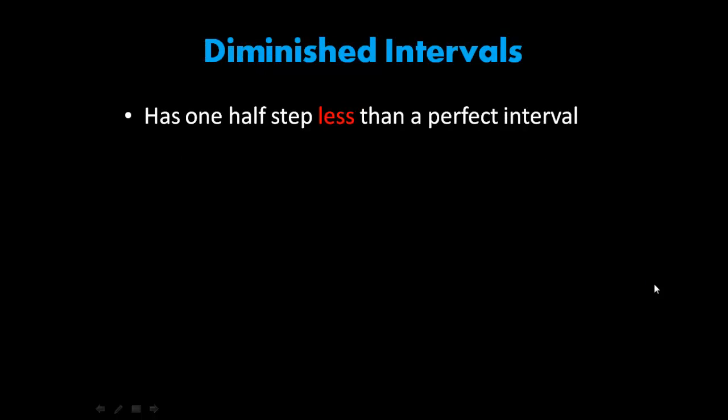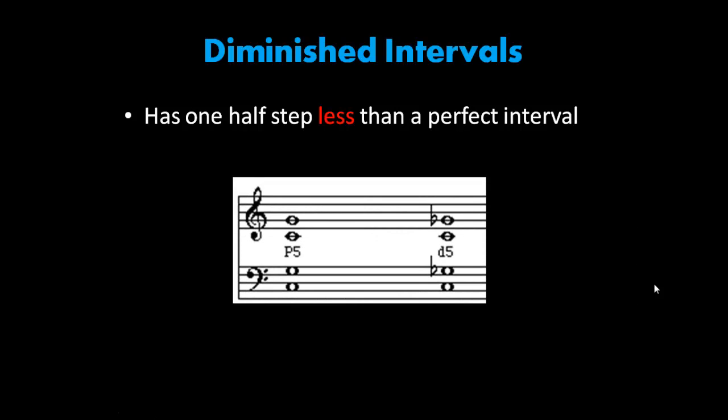Diminished intervals. They have one half step less than a perfect interval. As you can see, here's a perfect fifth, and here is a diminished fifth, since you lower the top G by a half step.